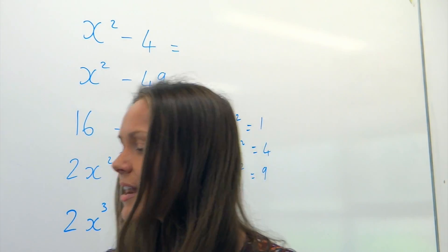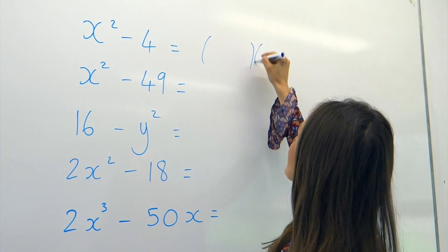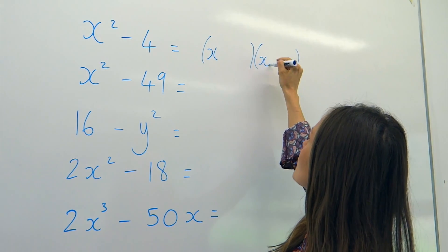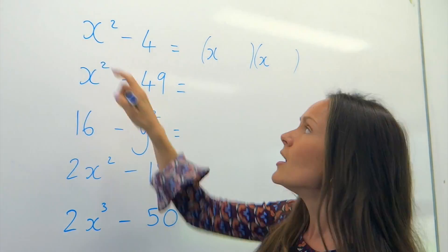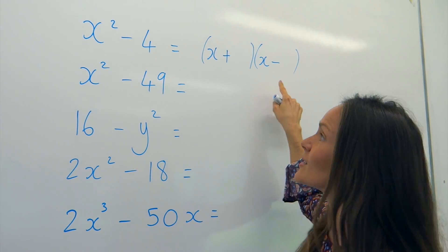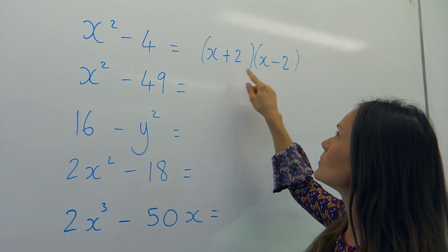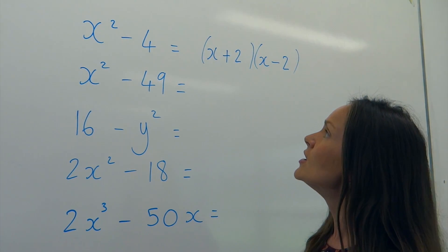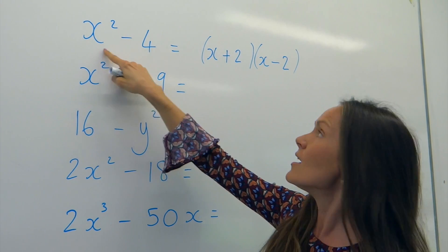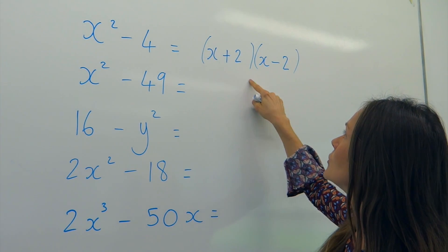Just like with the quadratic factorizing in the previous video, you need a set of double brackets. To get x squared, we fill in x in each bracket because x multiplied by x gives us x squared. When it's the difference of two squares, we need one plus and one minus. The other number is the square root of the constant — the square root of 4 is 2 — so we fill those in. It doesn't matter which way round we put them. If you multiply it back out: x times x gives x squared, the negative 2x and positive 2x cancel, and 2 times negative 2 gives negative 4.